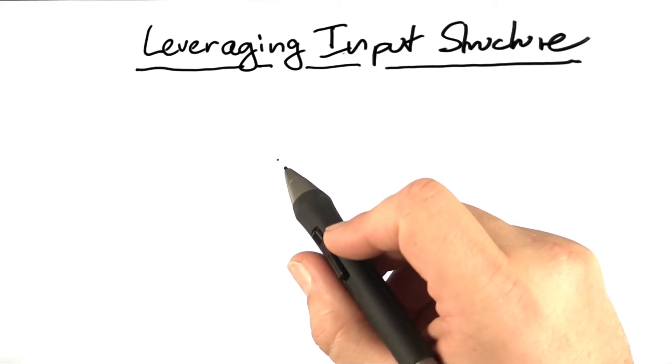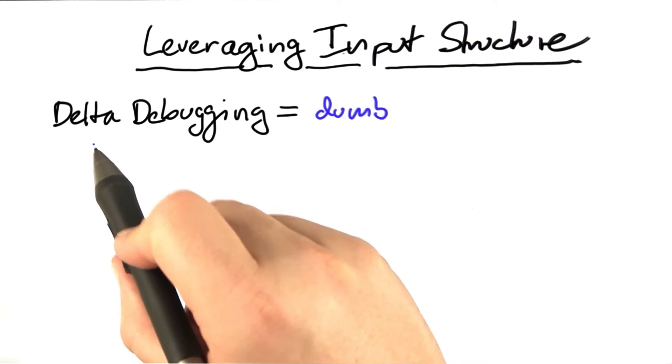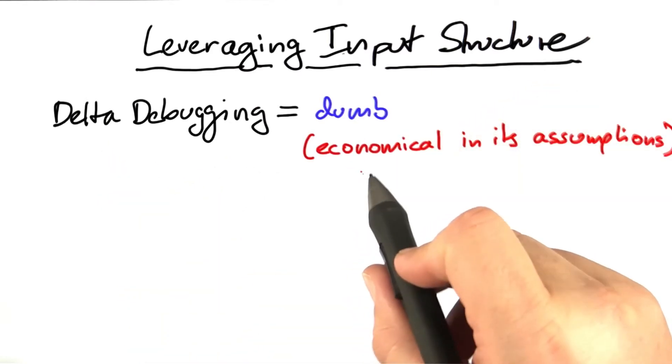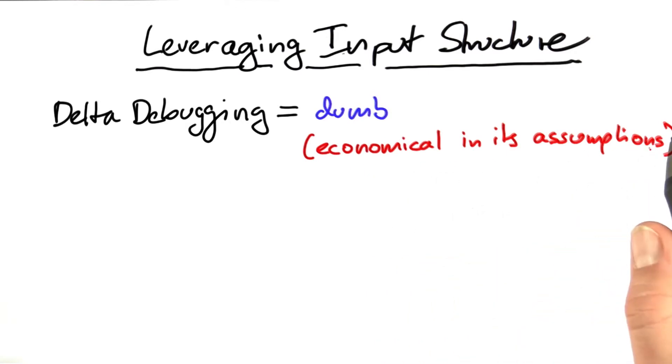Before we get to today's homework, let us see how we can make delta debugging faster. One must realize that delta debugging is a rather dumb algorithm, where dumb means it's rather economical in terms of assumptions.